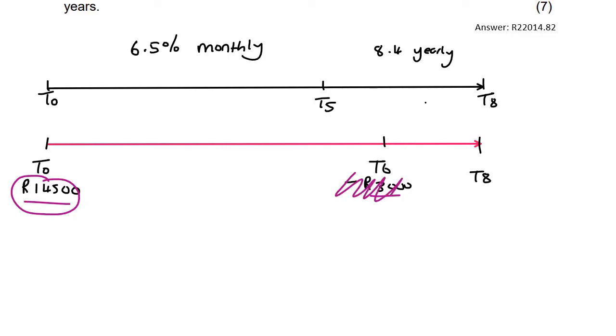And what I do now is I just take that 14,500 and I compound it all the way to the end, using the normal compound formula.